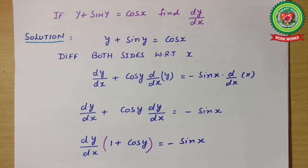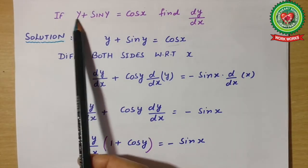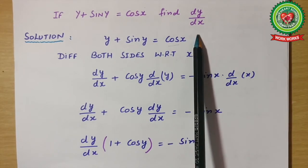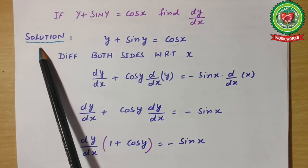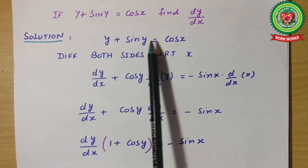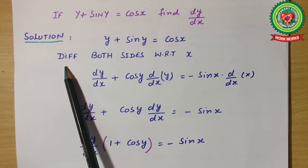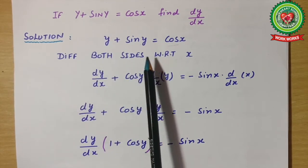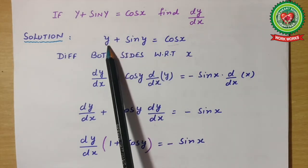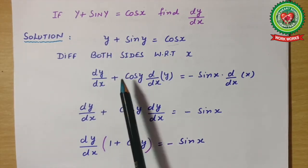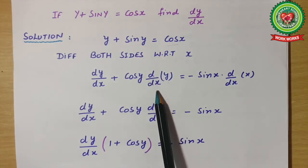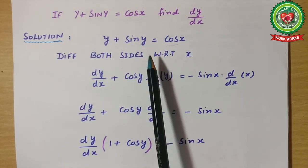Taking an example: if y + sin y = cos x, find dy/dx. We write down the expression as given: y + sin y = cos x. Second step, differentiate both sides with respect to x. Differentiation of y is dy/dx, plus differentiation of sin y is cos y. Now it is a term of the angle, so d/dx of y is dy/dx.